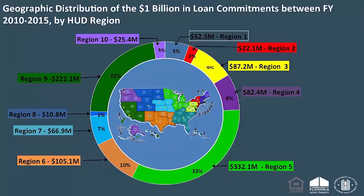This slide represents the geographical distribution of loan commitments over the past five years. HUD regions were used as the grouping factor. Region 5 and Region 9 have the largest loan commitments with 33 percent and 22 percent respectively. Region 8 holds only 1 percent. We want all regions to participate, and there's a lot of opportunity to increase that amount, which means more money for community development.